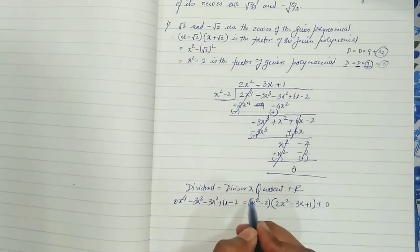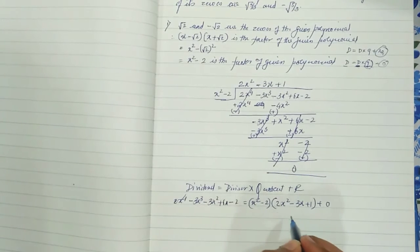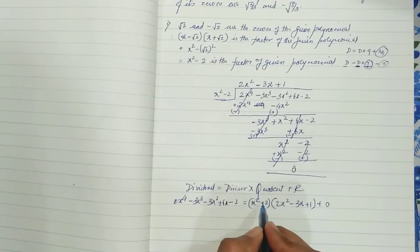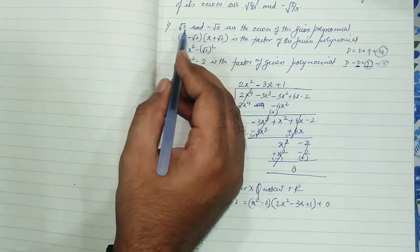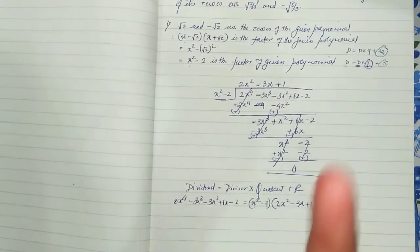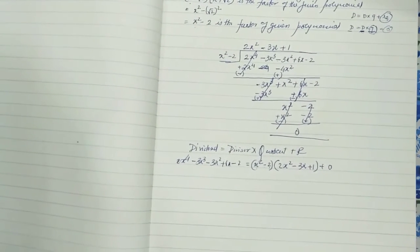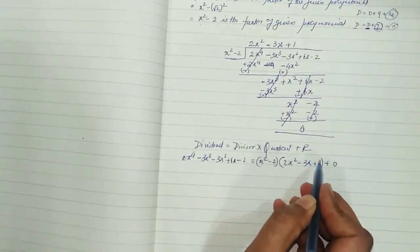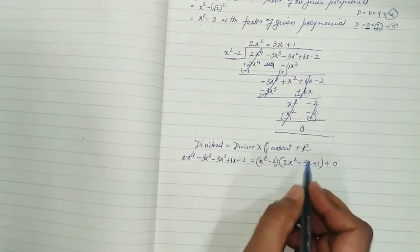Now we can see the biquadratic has factors in the form (x+a)(x+b)(x+c)(x+d). We already have two factors from x² - 2, which give zeros √2 and -√2. Now if we factorize the quadratic quotient 2x² - 3x + 1 by splitting the middle term, we will get the other two zeros.